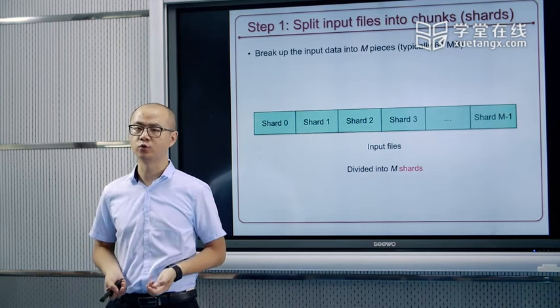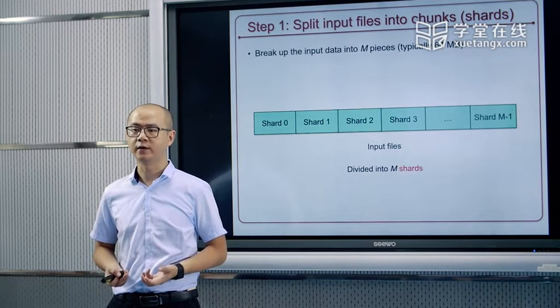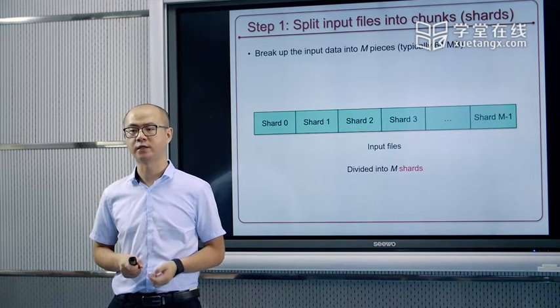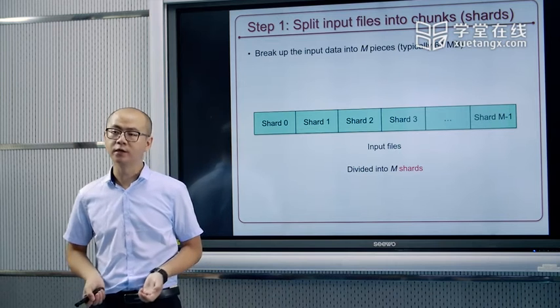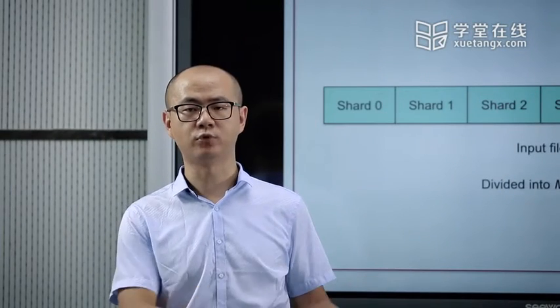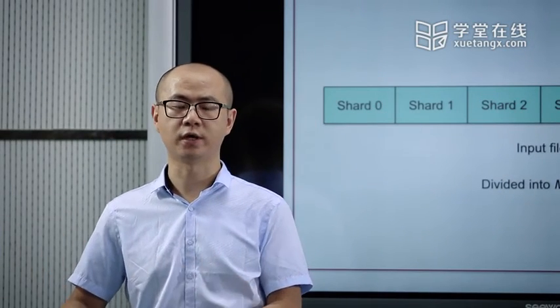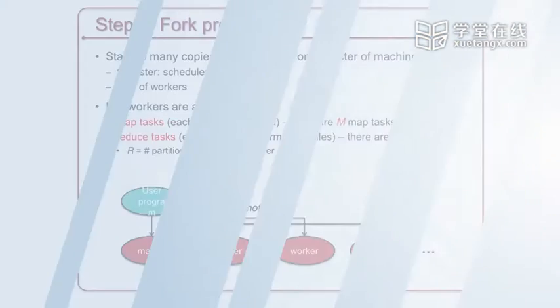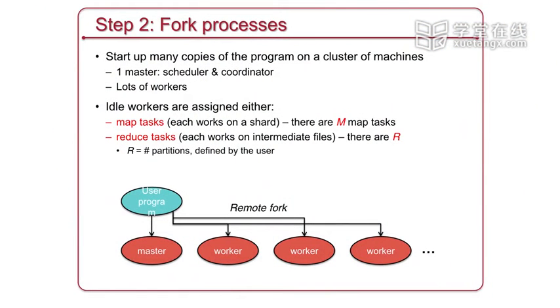这是MapReduce进行简单任务时经历的过程。我们把它详细分解一下，来看看步骤是什么样的。第一步是把原始需要处理的数据集文件分割成很多很多的小数据块，这和我们之前说到的分布式文件系统对应了，在分布式文件系统里我们已经有了这样一个一个的小数据块，我们把它们称作shard，从0到m-1，分布在不同的服务器上作为原始数据直接读入处理。